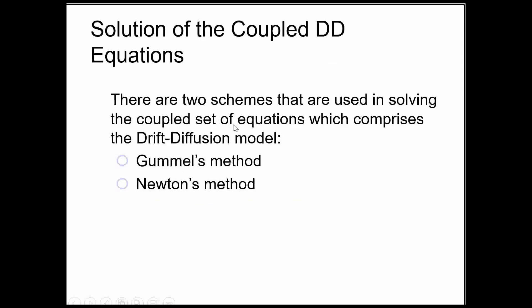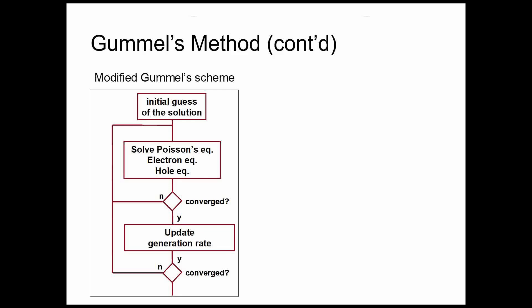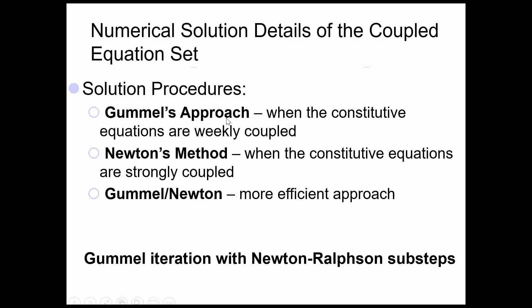These coupled drift-diffusion equations are being solved by Gummel and Newton's method. Basically Gummel iterative method along with Newton-Raphson substep we use, basically in SCAPS-1D. And this will be unlocked in our Google Meet sessions. You can see Gummel method: initial guess of the solution, solve Poisson, electron and hole equations. If it is converging, then take care into account the generation rate. This is how Gummel iterative method happens. Newton method I will not go in much detail. You can see Gummel approach when the consecutive equations are weakly coupled, Newton method when the consecutive equations are strongly coupled, and we are using a combination of them. Gummel-Newton is a more efficient approach. This is what Gummel iterative method with Newton-Raphson substeps is being used in SCAPS-1D.